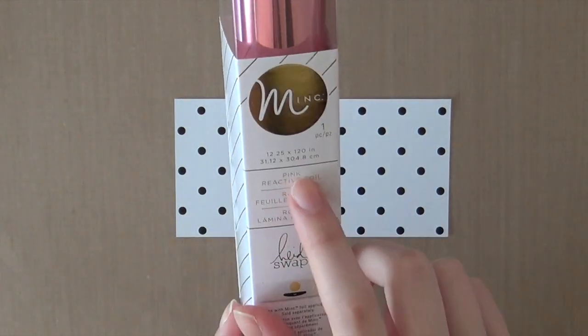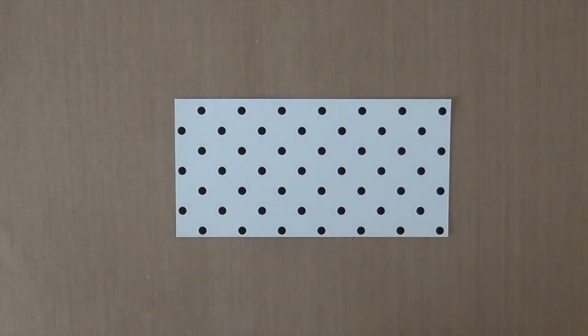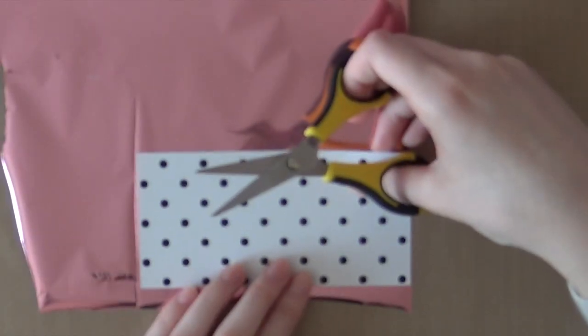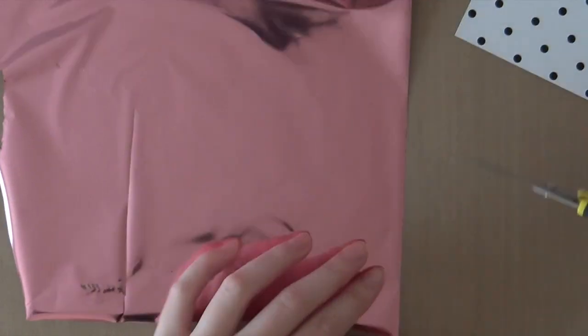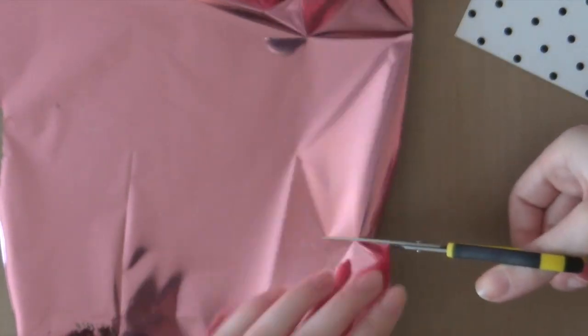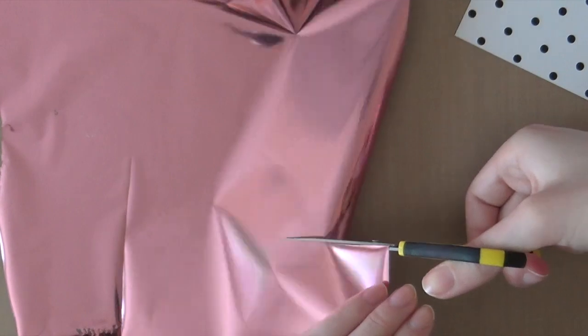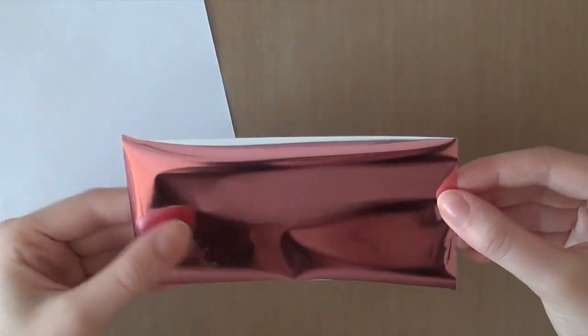Since I'm quite obsessed with foiling lately, I decided to use the pink foil from Heidi Swap. I'm just going to cut this to the size of my paper using my scissors. It doesn't have to be straight at all. I'm going to line up that foil with the piece of paper and run it through my laminator machine once it is heated.